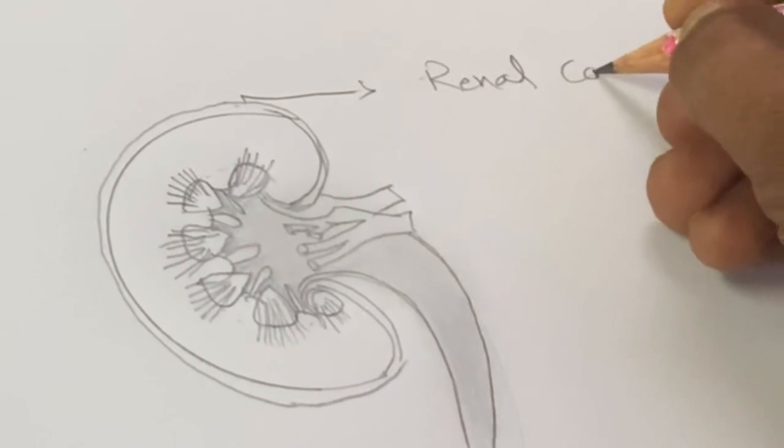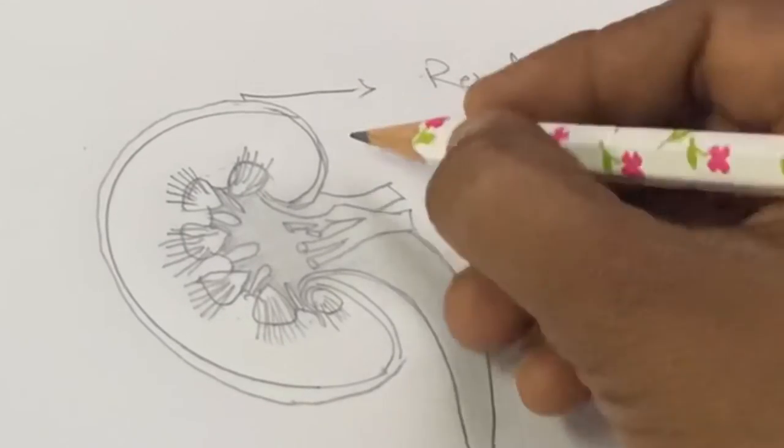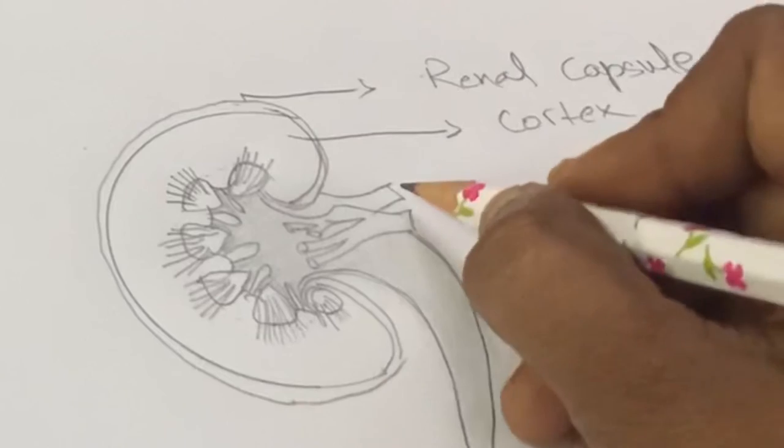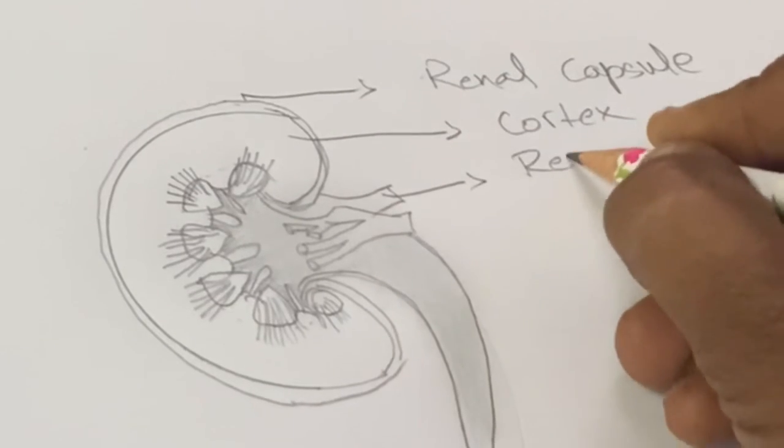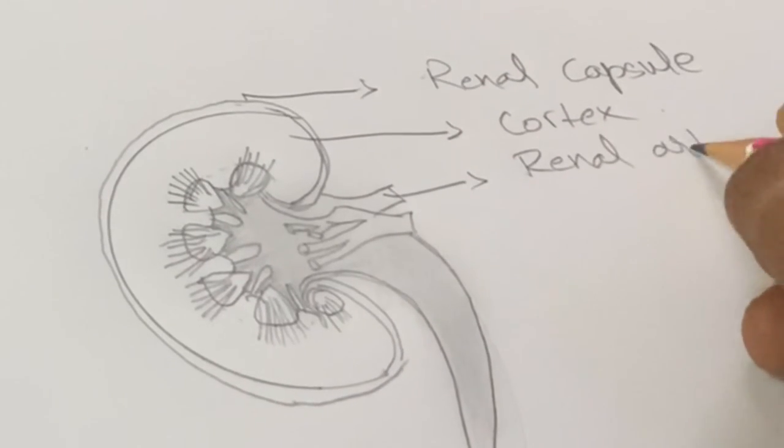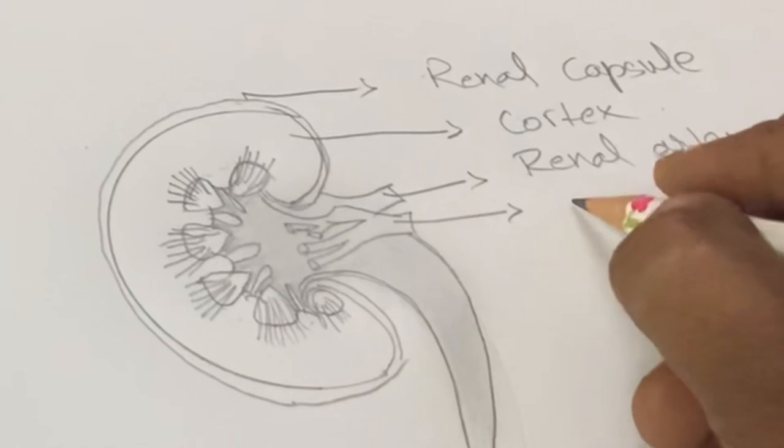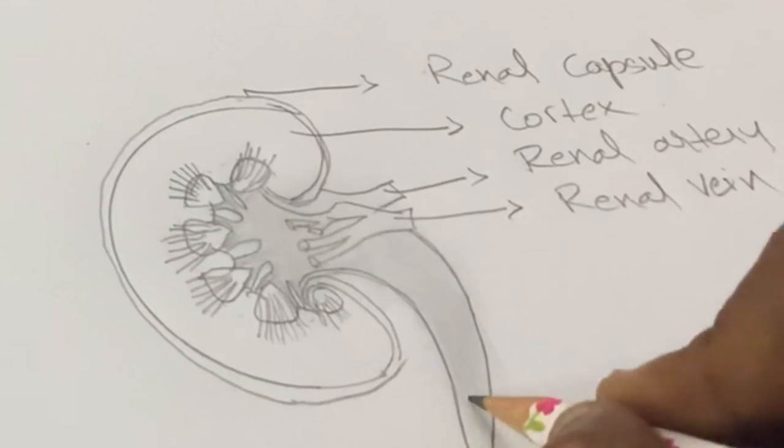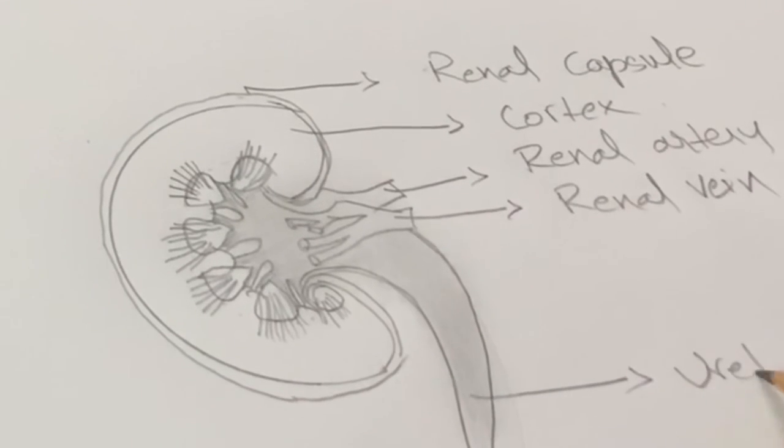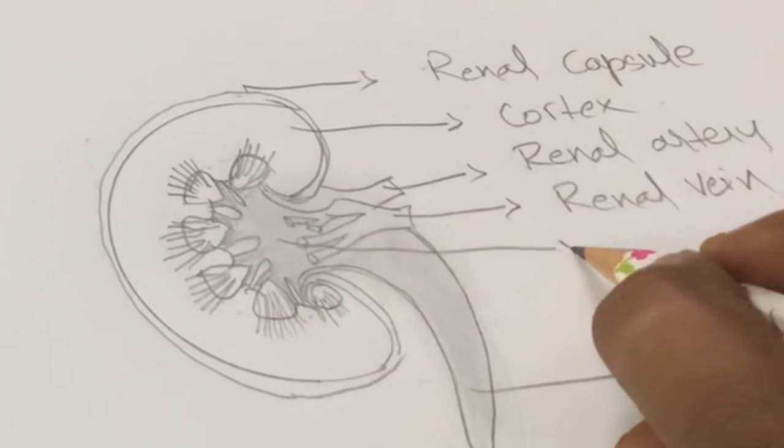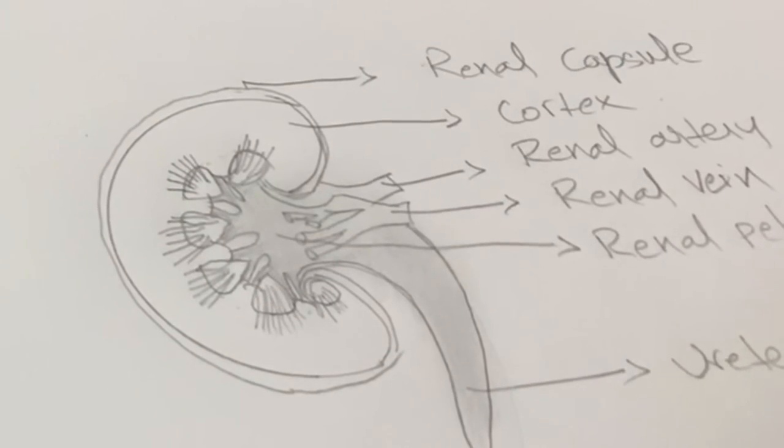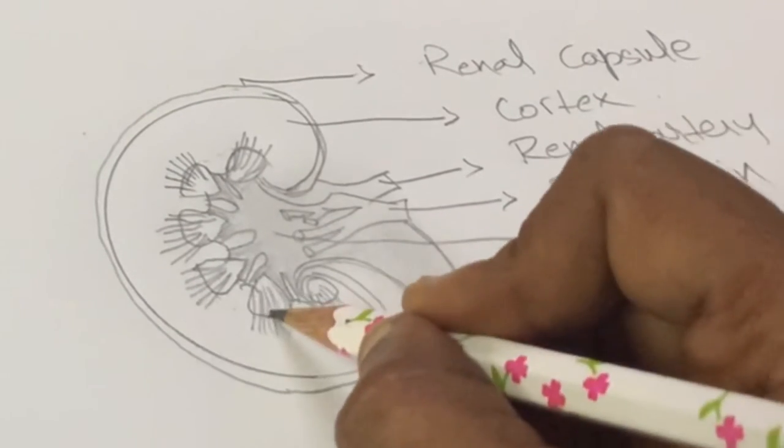This region is the cortex region. This is the renal artery and this is the renal vein. This is the ureter, and this region is the renal pelvis. These are the medullary pyramids.